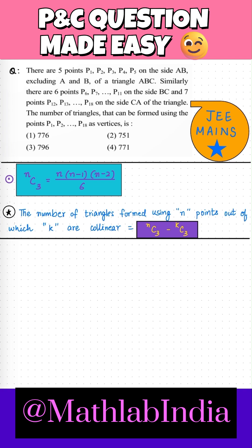So here, if I put n equals to 18 because you have 18 vertices, the total number of triangles that can be formed are 18C3 minus. Now, these 5 points here are on the side AB and they are collinear, so we have to subtract them.